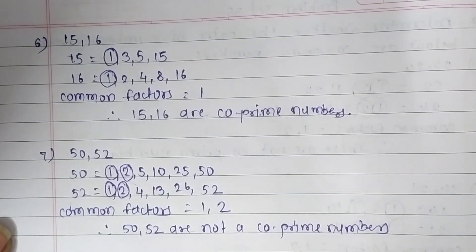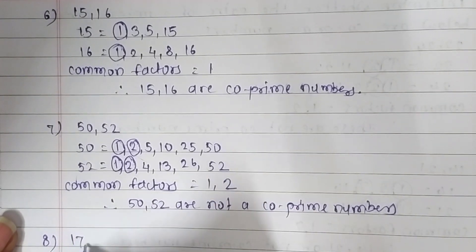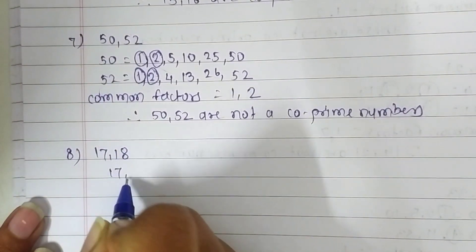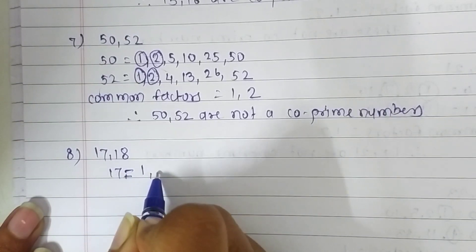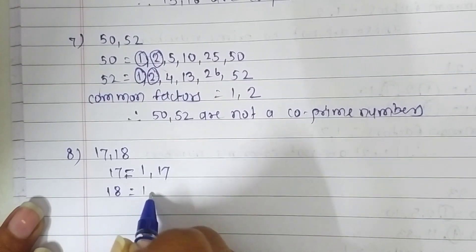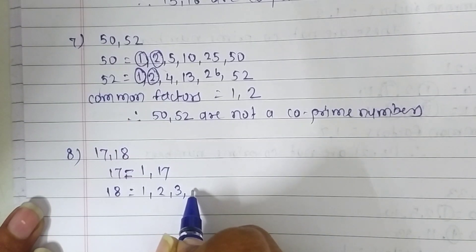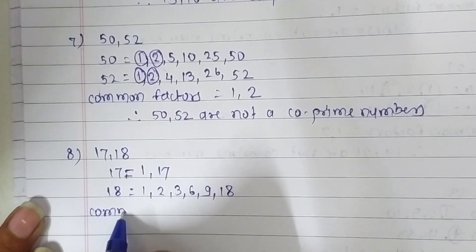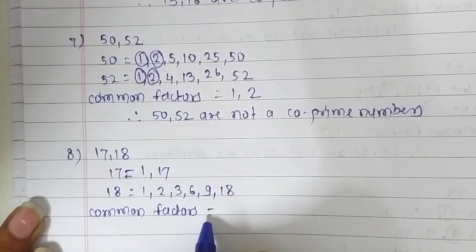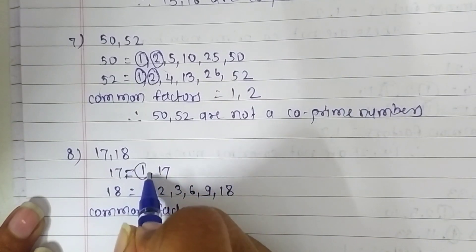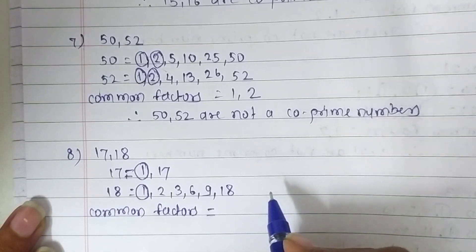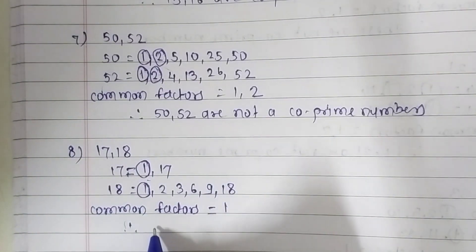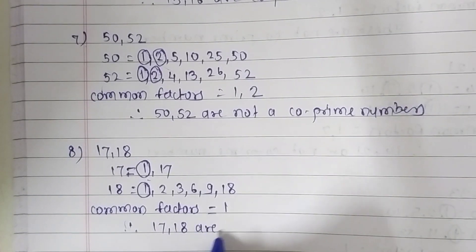Eighth and last question: 17 and 18. The factors of 17 are 1 and 17, because 17 is a prime number. The factors of 18 are 1, 2, 3, 6, 9, and 18. The only common factor is 1, so 17 and 18 are co-prime numbers.